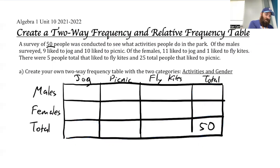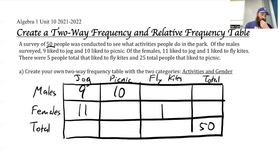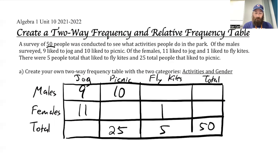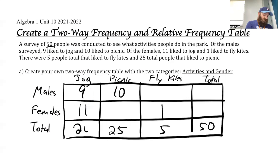Of the males surveyed, 9 like to jog and 10 like to picnic. Of the females, 11 like to jog and 1 likes to fly kites. There were five people total that like to fly kites, so five will go here. And 25 people that like to picnic, so 25 will be here for the picnic. Now I have some missing data, but I have enough information to get everything. The total number of people jogging: 9 plus 11 gives me 20. Quick check — 20 plus 25 plus 5 equals 50. We're good.